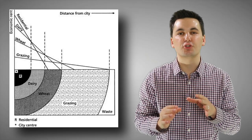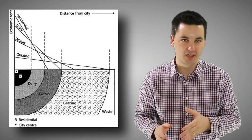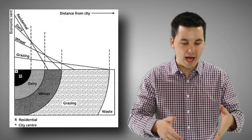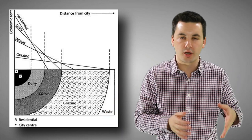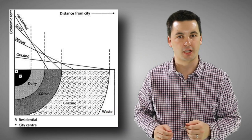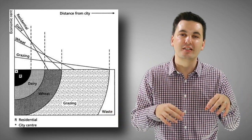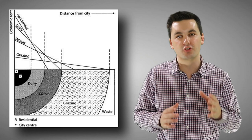Von Thunen used these assumptions so the model could be applied to different geographic areas. Before we go over his model, I need to make sure you remember the bid-rent theory from unit 5 topic 6. The bid-rent theory looks at the value of land as we move farther away from an urban area — the price of land goes down, and closer to an urban area the price goes up. We're more likely to see extensive agriculture practiced further away from a market, and intensive agriculture near an urban area, all based on the price of land. If you don't remember, go check out my 5.6 video and come back.